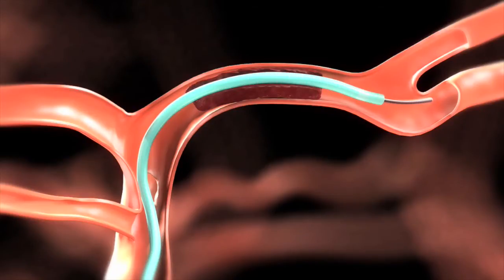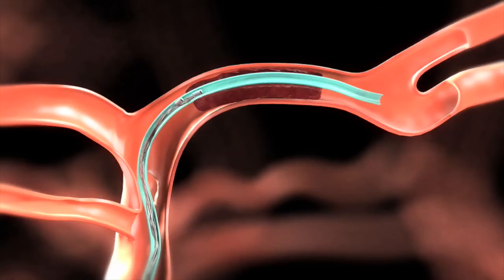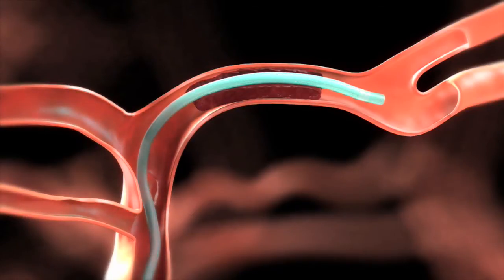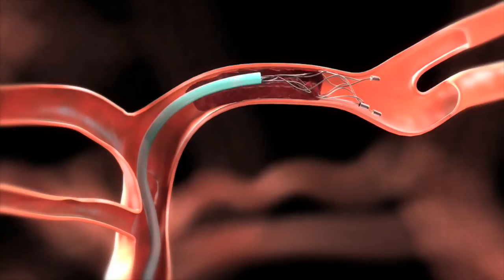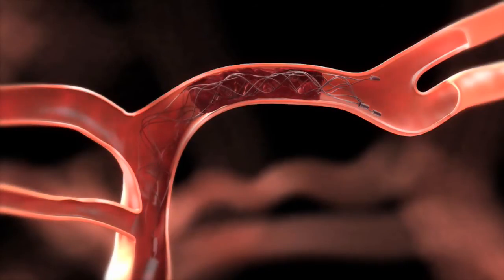Once we're across the blockage, we bring up a mechanical thrombectomy device, which is kind of a stent-on-a-stick configuration. It's a stent-like device that we unsheathe within the clot in the blockage. You can see the stent is opening up and actually restoring blood flow immediately. We then give it about five minutes, allowing the radial force of the stent to open up outward and allowing the clot to extrude within the lumen or inside of the stent.